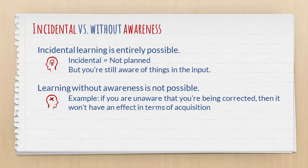But Schmidt says you're still aware of things in the input. Learning without awareness, on the other hand, for Schmidt, is not possible. And the example that he gives is that if you are unaware that you're being corrected, then that correction will have absolutely no effect in terms of acquisition.